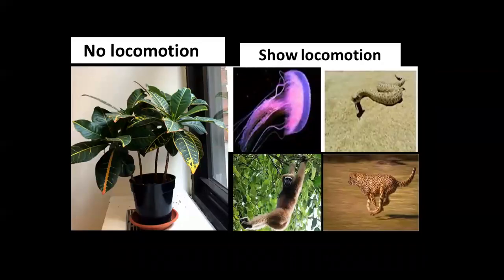Plants don't show any locomotion. On the other hand, all types of animals, different types of animals, show different types of locomotion.